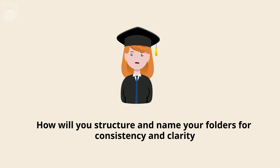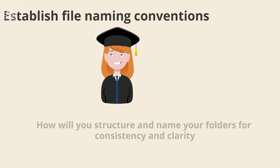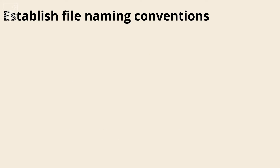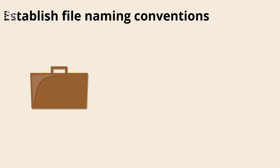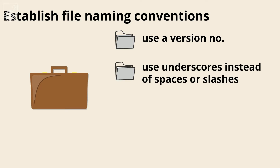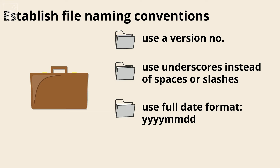Next, think about what documentation and metadata will accompany the data. How will you structure and name your folders for consistency and clarity? Describe how you will establish file naming conventions. Always name files in a consistent manner. Some tips include using a version number, using underscores instead of spaces or slashes, and using a full date format such as year, month, day.